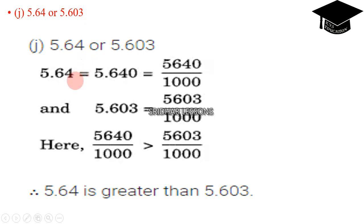5.64 or 5.603. 5.64 can be written as 5640 by 1000. Here 5.603 is 5603 by 1000. Because denominators are equal, 5640 by 1000 is greater than 5603 by 1000.